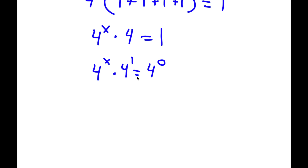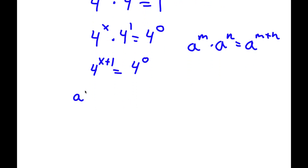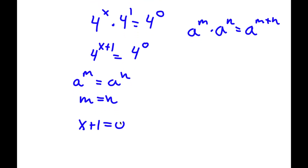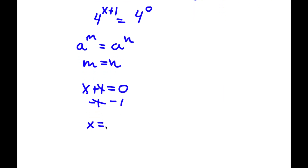Now, 4 is the same thing as 4 to the power of 1. And if I have something in the form a to the power of m times a to the power of n, this is equal to a to the power of m plus n. And this means that m is equal to n. So this means that x plus 1 is equal to 0. To solve this, simply subtract 1 on both sides, and now I have x is equal to negative 1. So this is my answer.